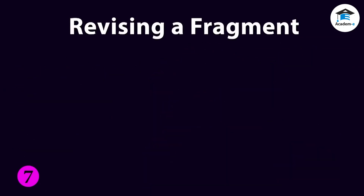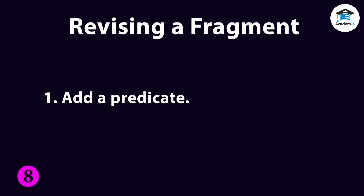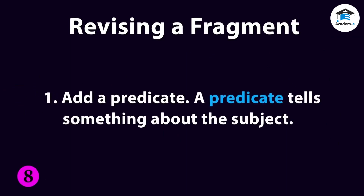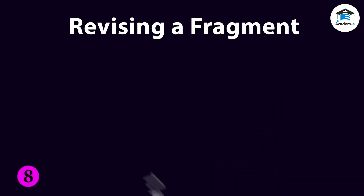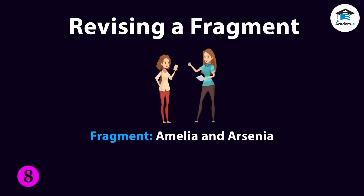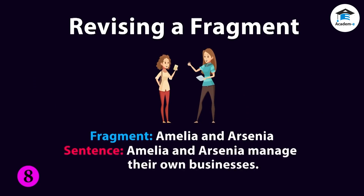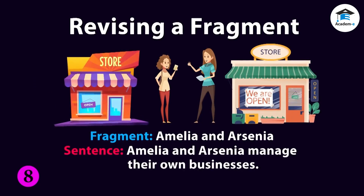There are different ways to turn a fragment into a complete sentence. Take note of the following important points. First, you can make a fragment into a sentence by adding a predicate. A predicate tells something about the subject. Example: to the fragment 'Amelia and Arsenia,' add the predicate 'manage their own businesses.' So, 'Amelia and Arsenia manage their own businesses' is now a sentence.